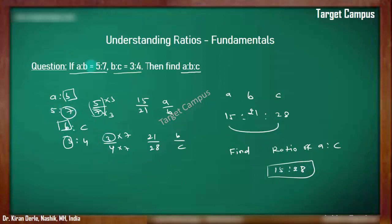We were given A:B and B:C, and we made the B parts common by finding LCM and multiplying each ratio accordingly so the value of the ratio stays intact. This is the basic fundamental of working with compound ratios.